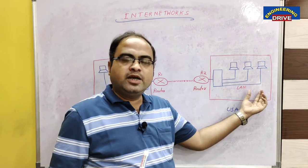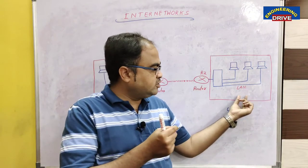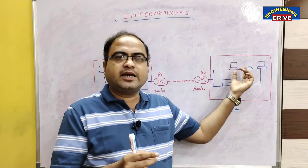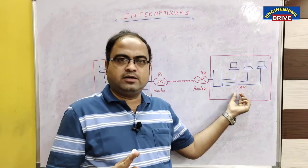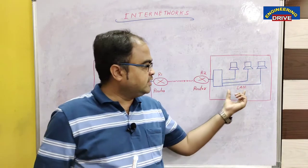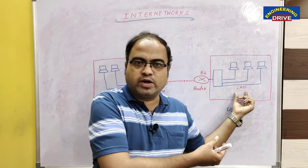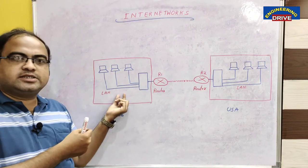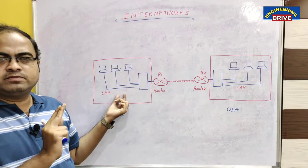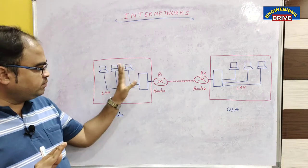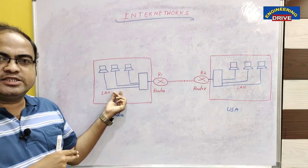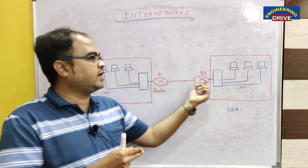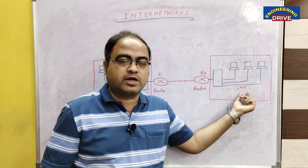A similar thing happens in the USA office also. The employees of the USA branch can communicate with each other with the help of LAN. So the India branch is an example of a network, and the USA branch is also an example of a network, because multiple devices are connected with each other through the local area network.